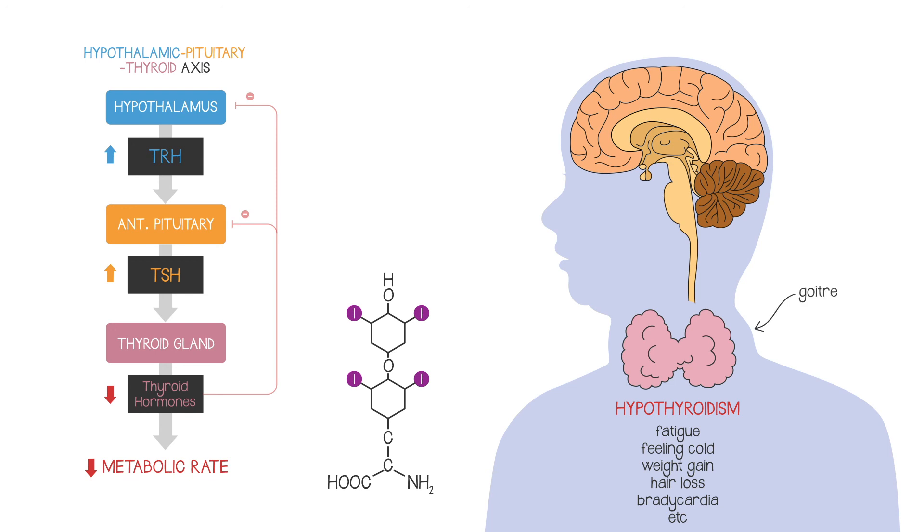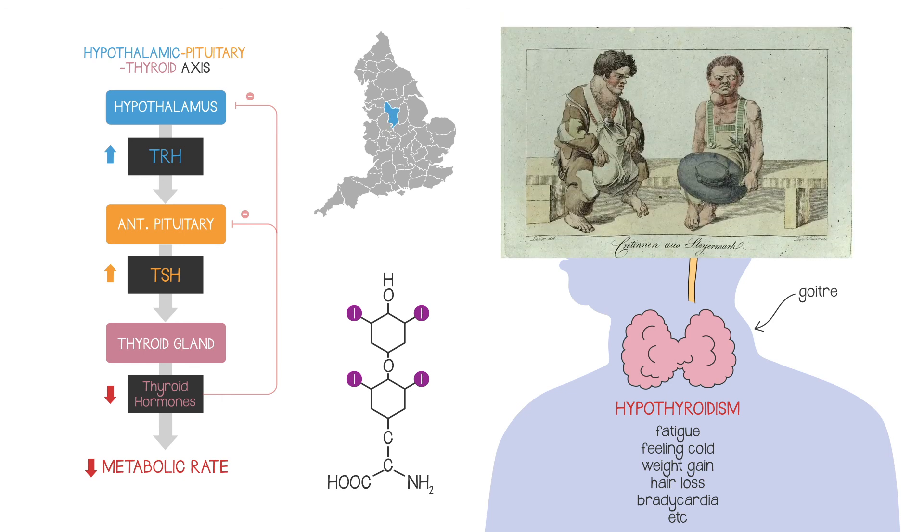Historically, iodine was low in the county of Derbyshire in central England, and doctors there were used to seeing patients with a goiter, a swelling in their neck. It became known as Derbyshire neck.